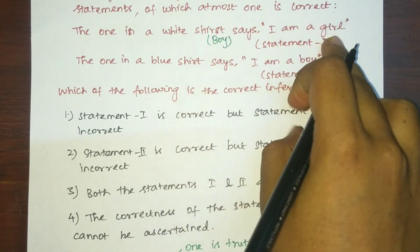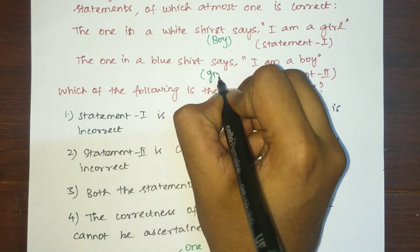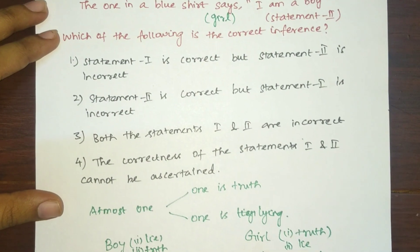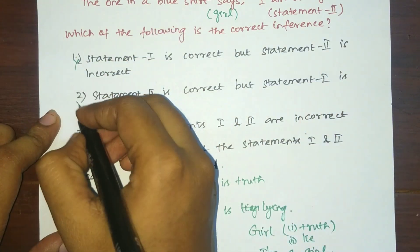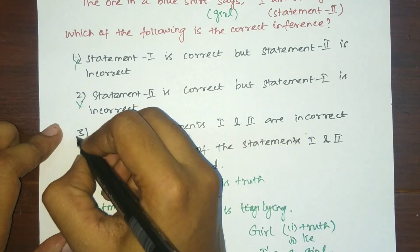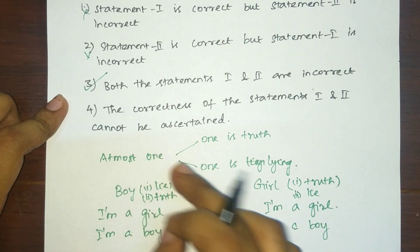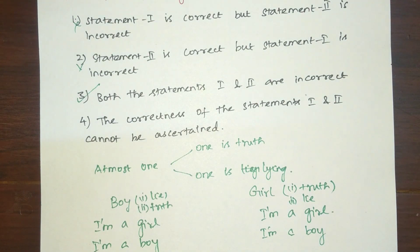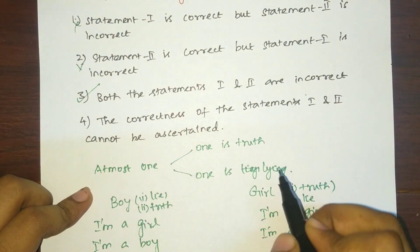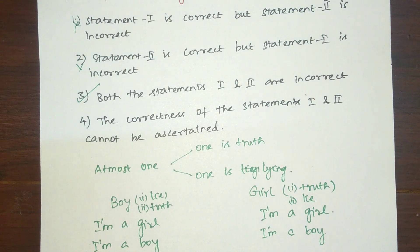So the one in the white shirt is actually a boy and is lying, and the one in the blue shirt is actually a girl and is lying. From the options: statement one is correct but statement two is incorrect? No. Statement two is correct but statement one is incorrect? No. Both statements one and two are incorrect — that is right. The correctness of the statements cannot be ascertained is option four — but we already determined both are lying, so option three is the right answer. This concludes the expected solutions for CSIR June 2019. Please leave your suggestions in the comments. Thank you for watching!